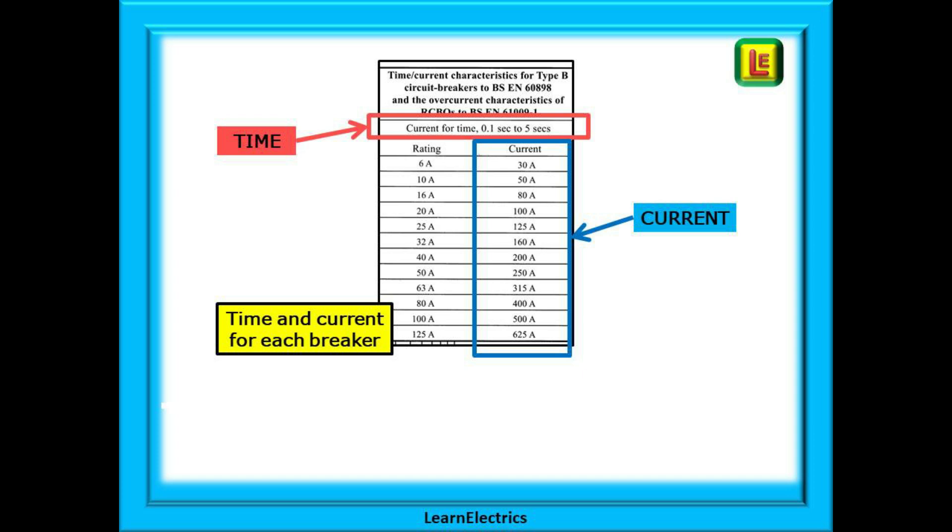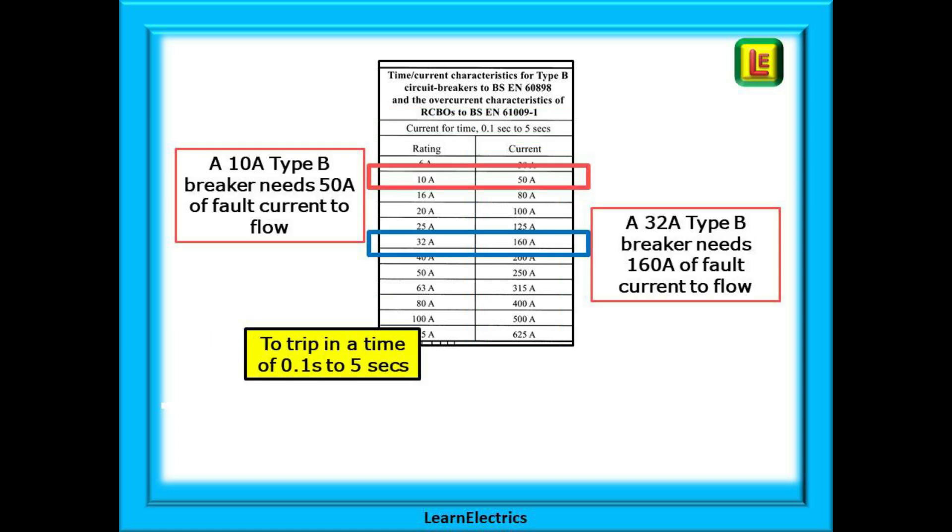Look closely at the box. It indicates the time at the top, the red box here, and the current is in the blue box. It tells us the time and current for each size of breaker or RCBO. A 10 amp breaker needs 50 amps of fault current to operate in the time indicated whilst a 32 amp device requires a lot more, 160 amps.